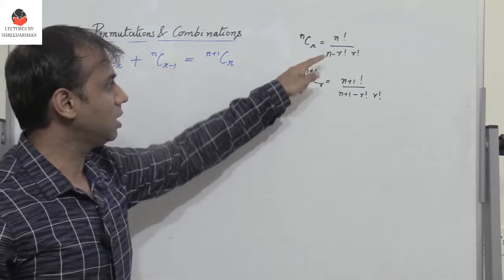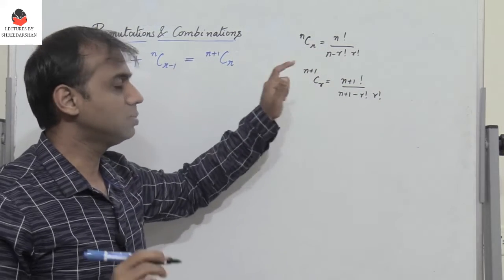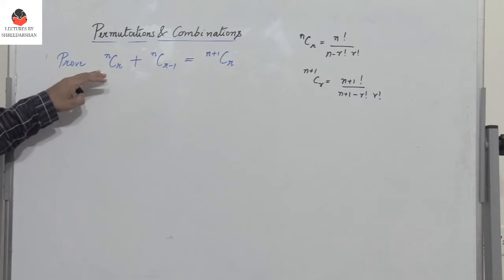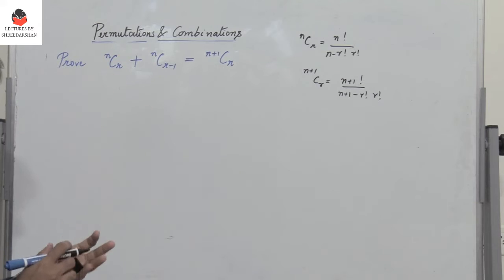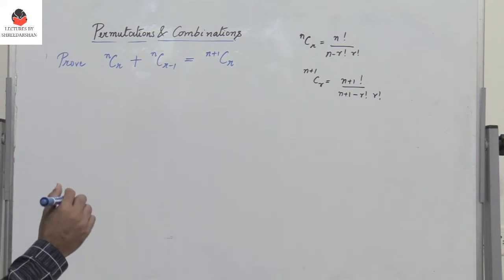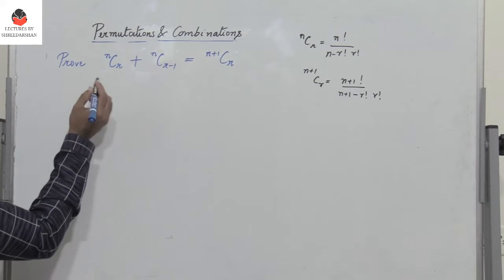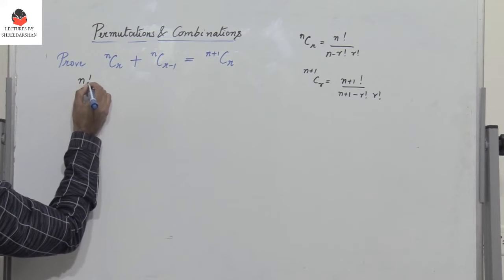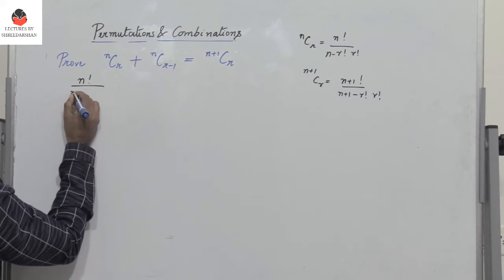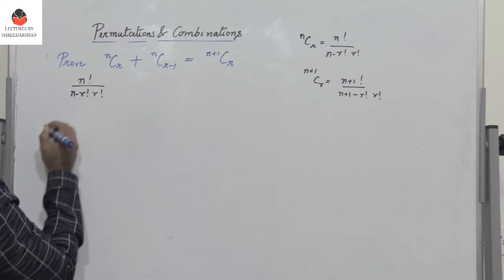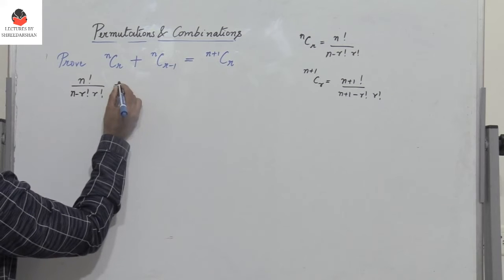Now let us see how we can prove LHS equals RHS. Using the general expression for combinations, NCR equals N factorial divided by (N minus R) factorial into R factorial, plus the next term.